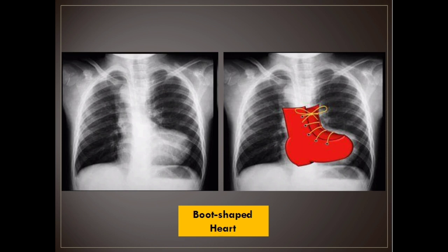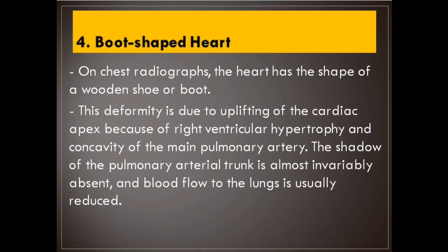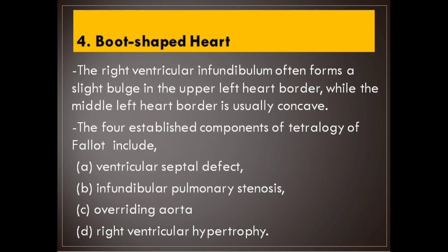Number 4: Boot-shaped heart. On chest radiographs, the heart has the shape of a wooden shoe or boot. This deformity is due to uplifting of the cardiac apex because of right ventricular hypertrophy and concavity of the main pulmonary artery. The shadow of the pulmonary arterial trunk is almost invariably absent, and blood flow to the lungs is usually reduced. The right ventricular infundibulum often forms a slight bulge in the upper left heart border, while the middle left heart border is usually concave.